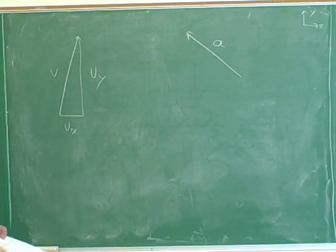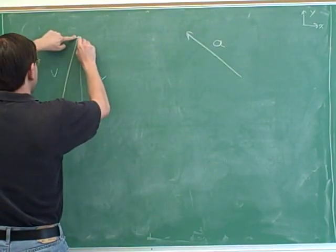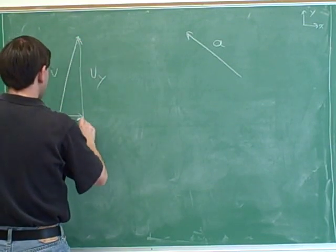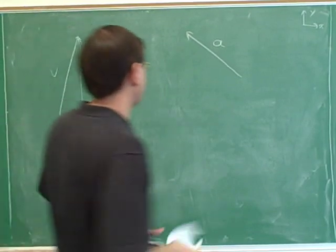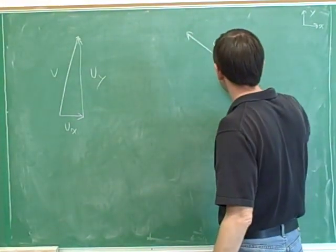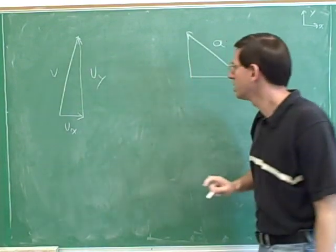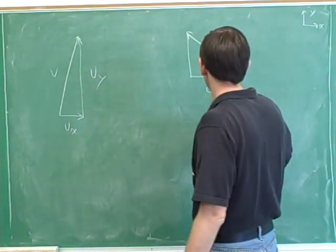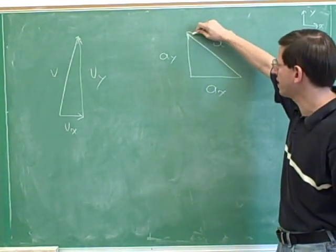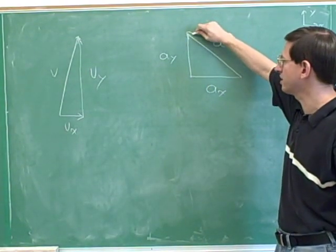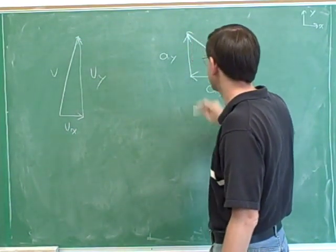We've got to put in arrows. The overall vector was pointing up and to the right, so vertically we're moving up and horizontally we're moving to the right. Then we do the same thing for the acceleration — draw a right triangle that uses the overall vector as its hypotenuse, label the sides, and put in arrows. The overall acceleration vector is pointing up and to the left, so our legs are pointing up and to the left.